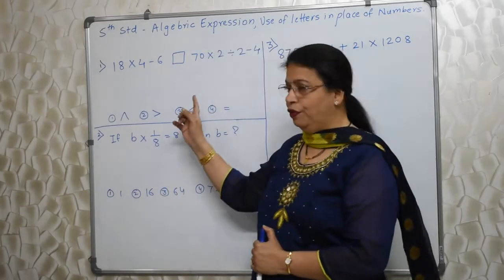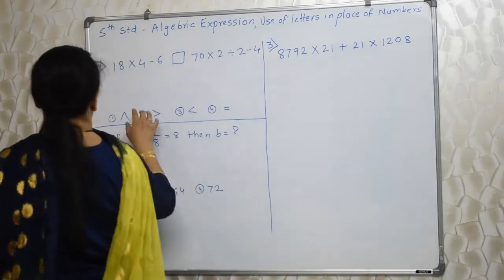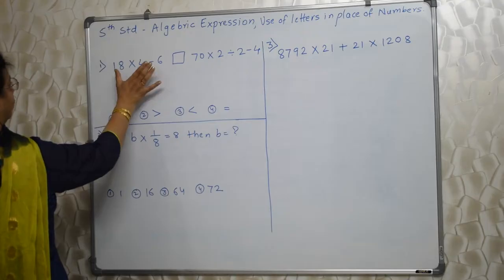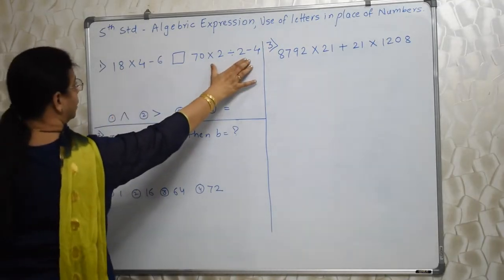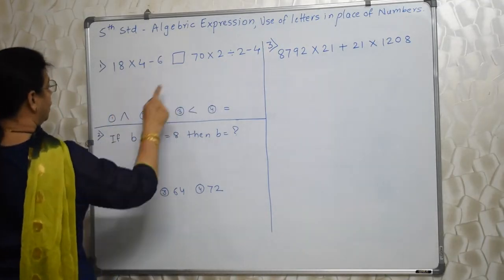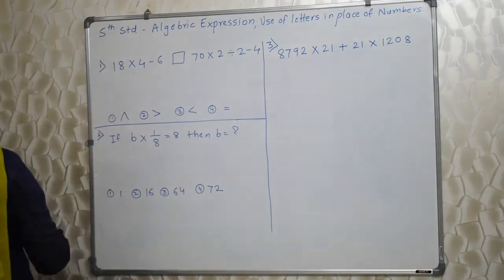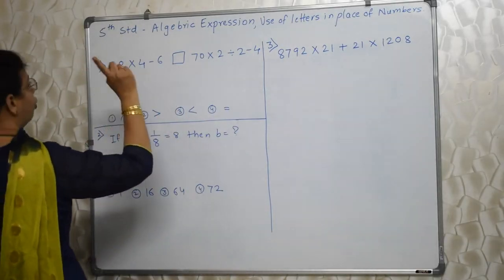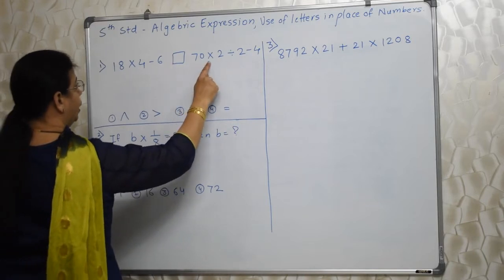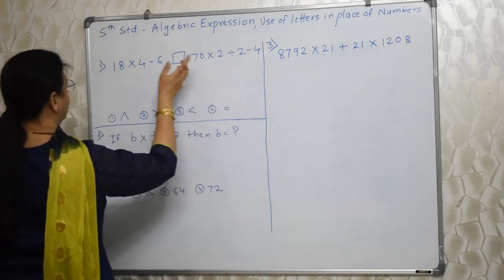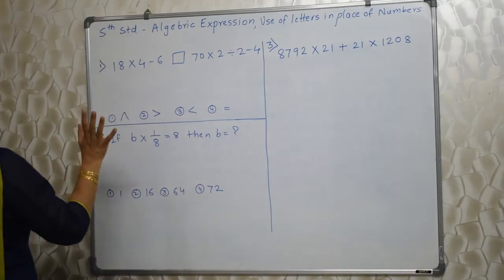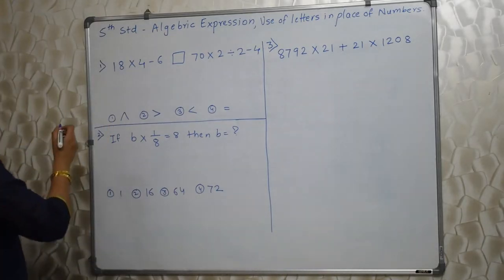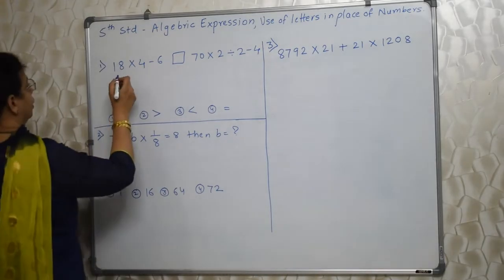I have written a few sums here. We are supposed to calculate the value of this expression and the value of this expression, then compare the values and choose the correct option. Please be careful — we have to use BODMAS, because multiplication, division, subtraction, many operations are there. We have to follow BODMAS and solve accordingly.